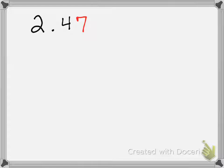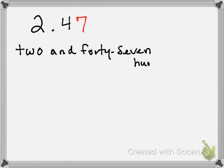Let's take a look at this decimal. This decimal says 2.47. How we actually read that would be two and forty-seven hundredths. Let's write this in word form. Two and forty-seven hundredths.